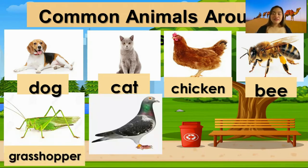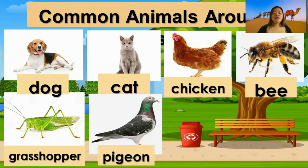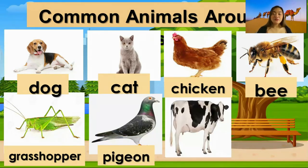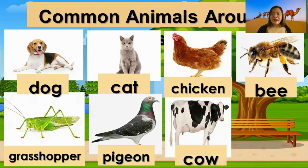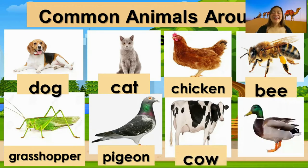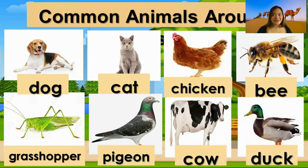Next, what animal is it? It is a pigeon. How about this one? I know all of you know this animal — it is a cow. And for the last animal, what animal is it? It is a duck.